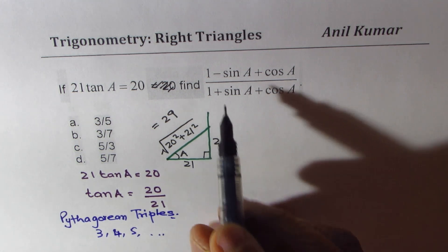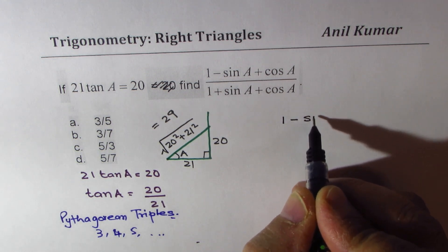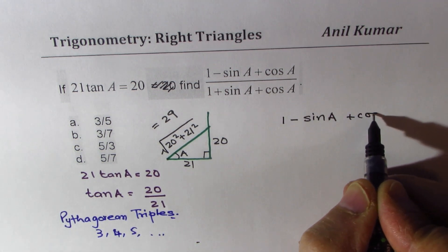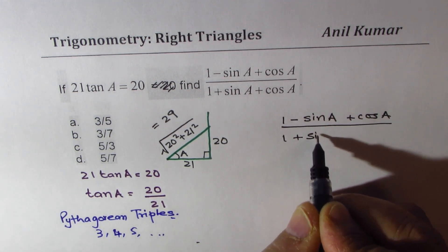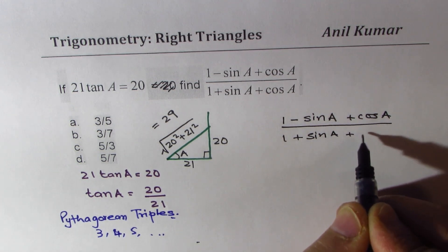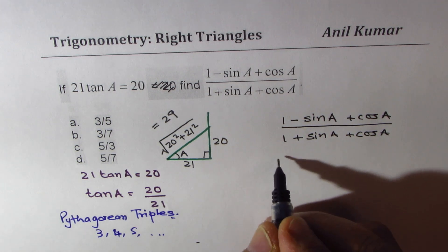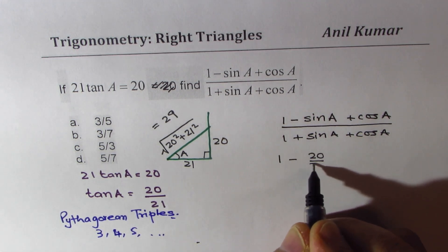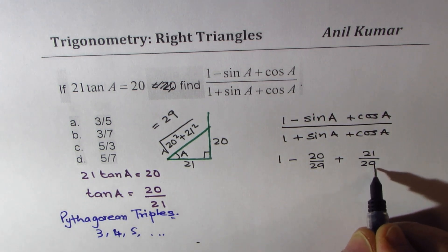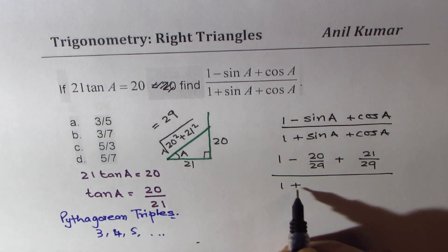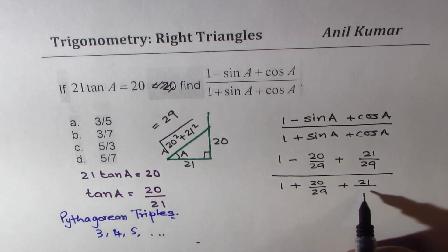Now since we know, now we can actually substitute the values. We want to find what is (1 - sin A + cos A) over (1 + sin A + cos A). So sin A is 20 over 29. So we can write this as 1 - 20/29 + 21/29, denominator is 1 + 20/29 + 21/29.